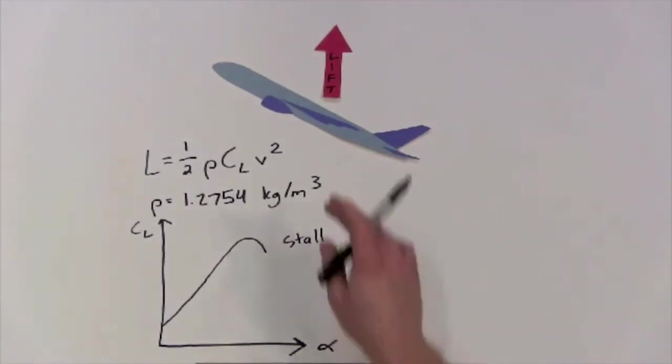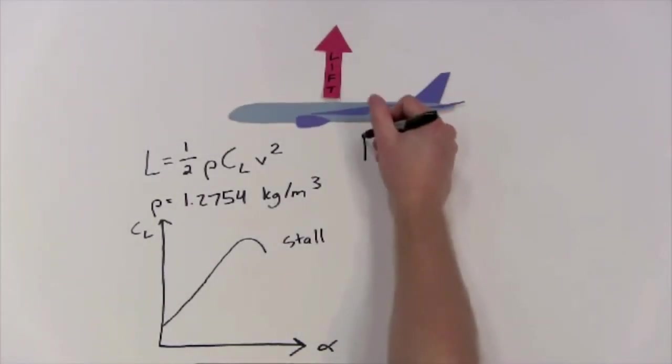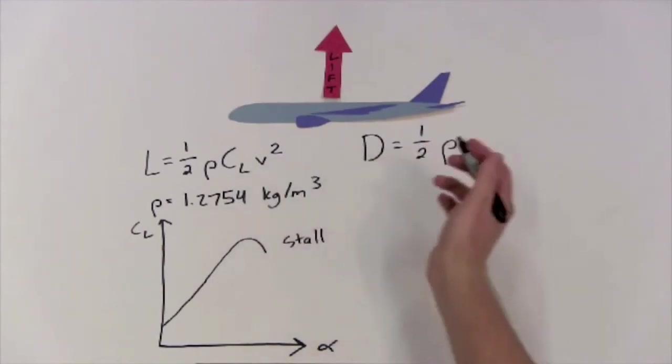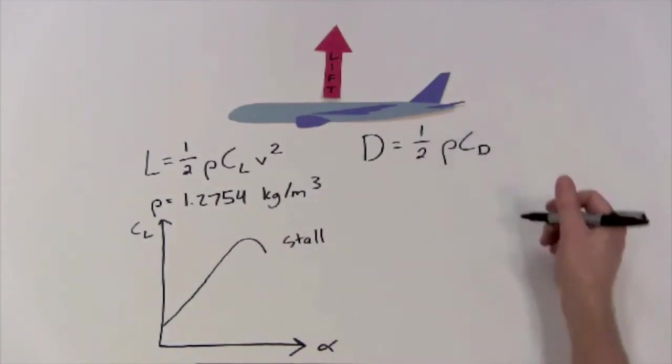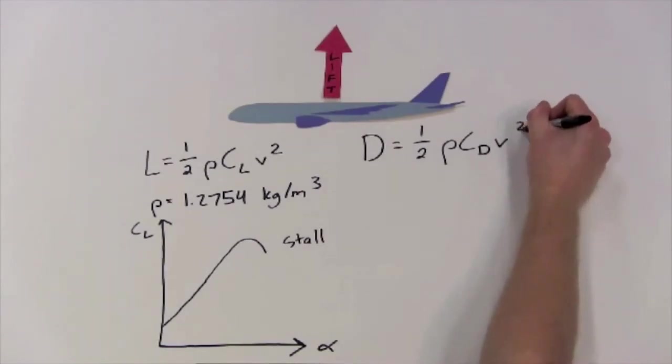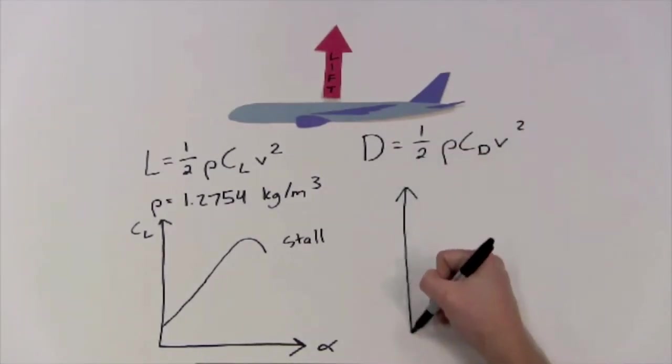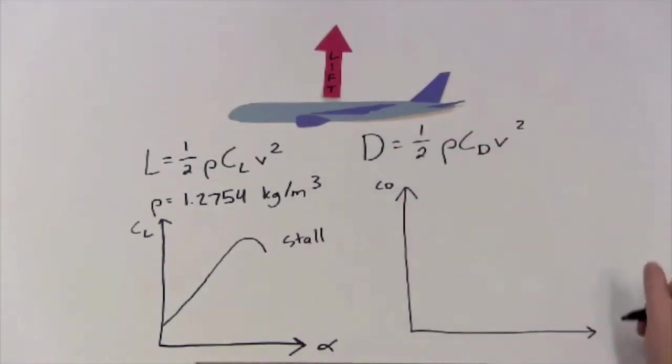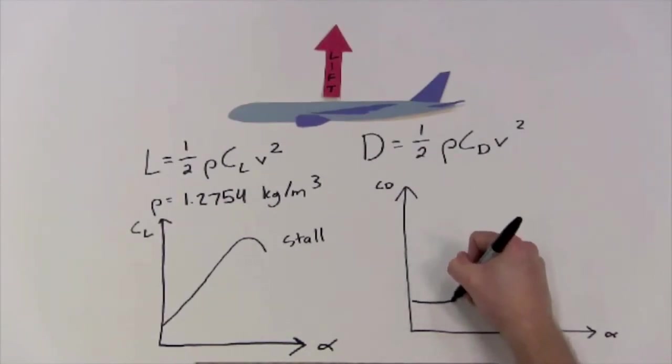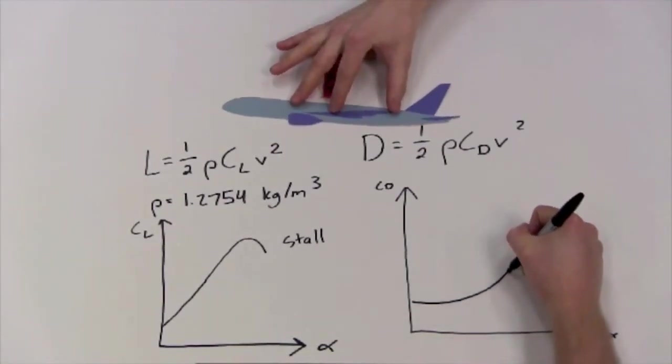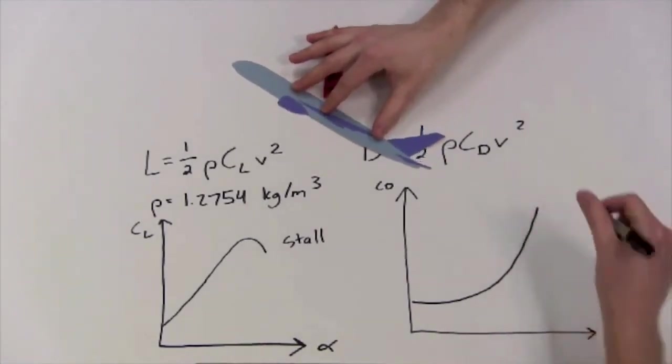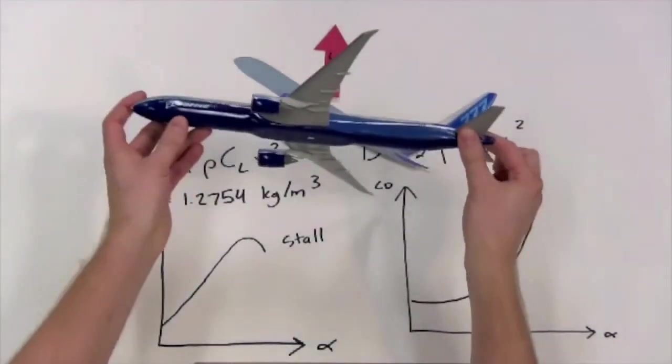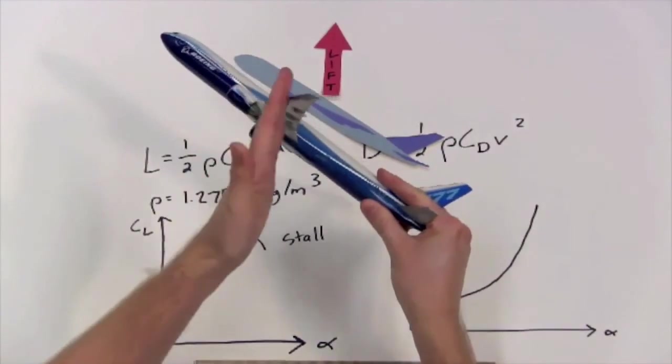There's a similar equation for the drag per unit wing area D. D equals one-half rho - not C_L, that really wouldn't make any sense - C_D. As you can guess, it's the coefficient of drag times the velocity squared. The coefficient of drag is another number that tells us something about the wings and it also varies with the angle of attack.